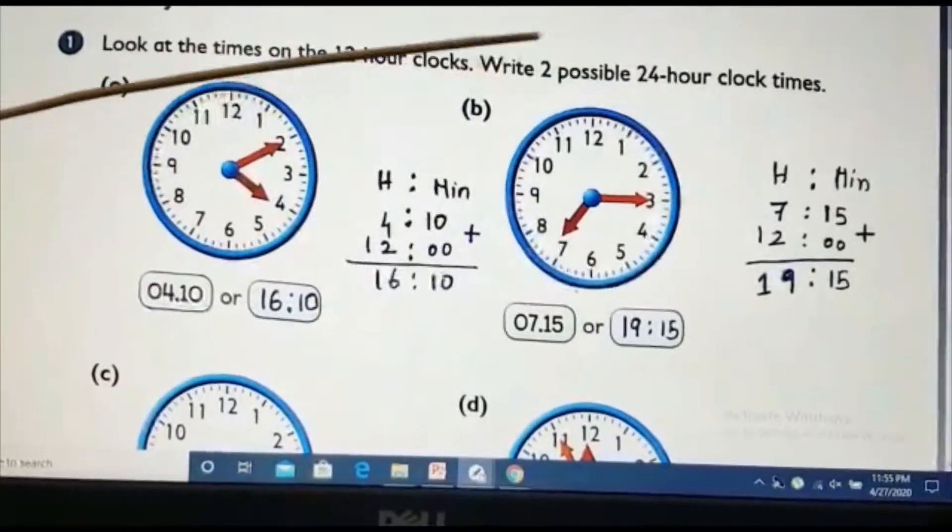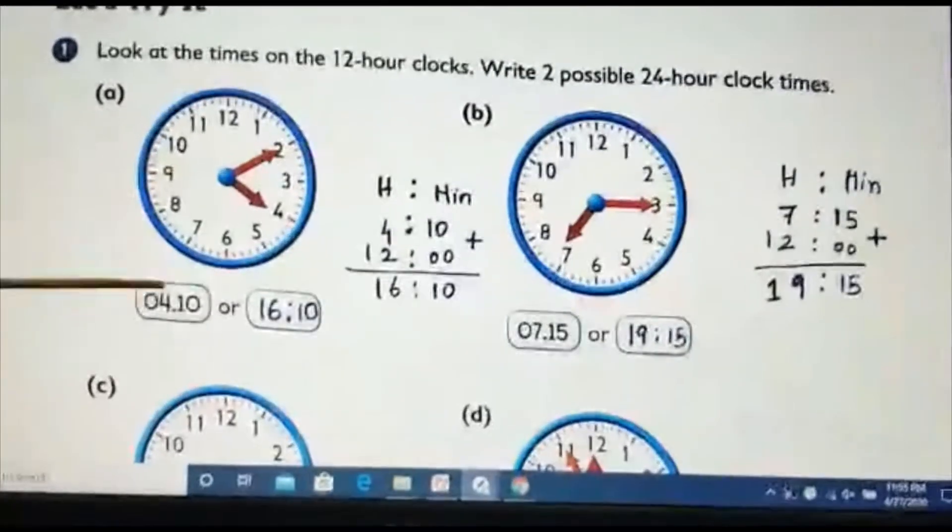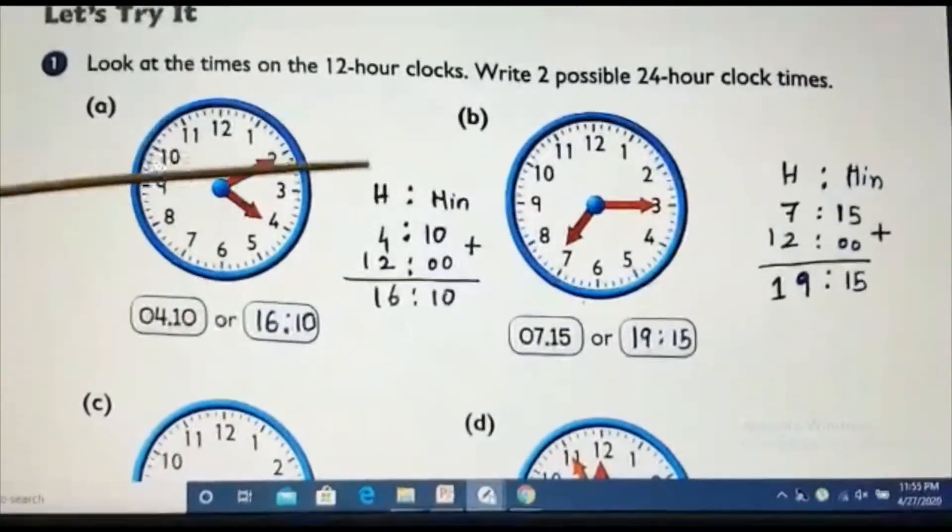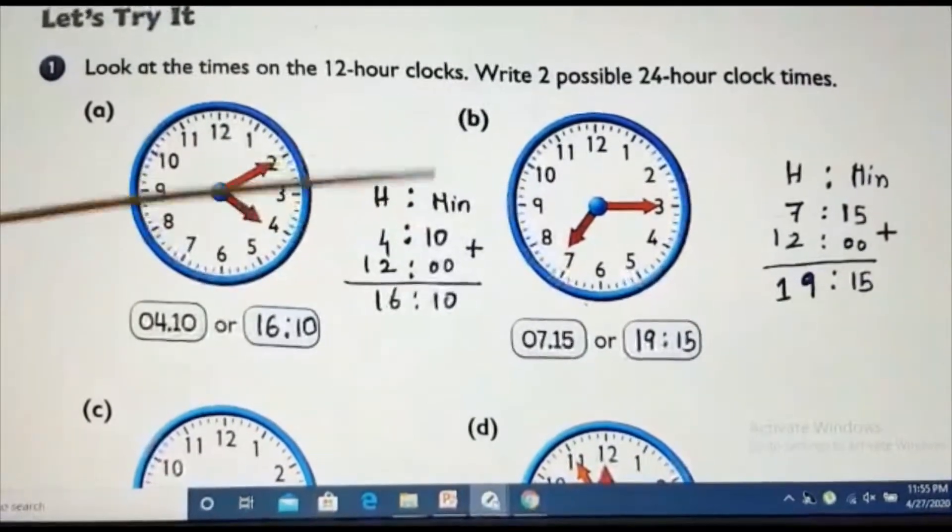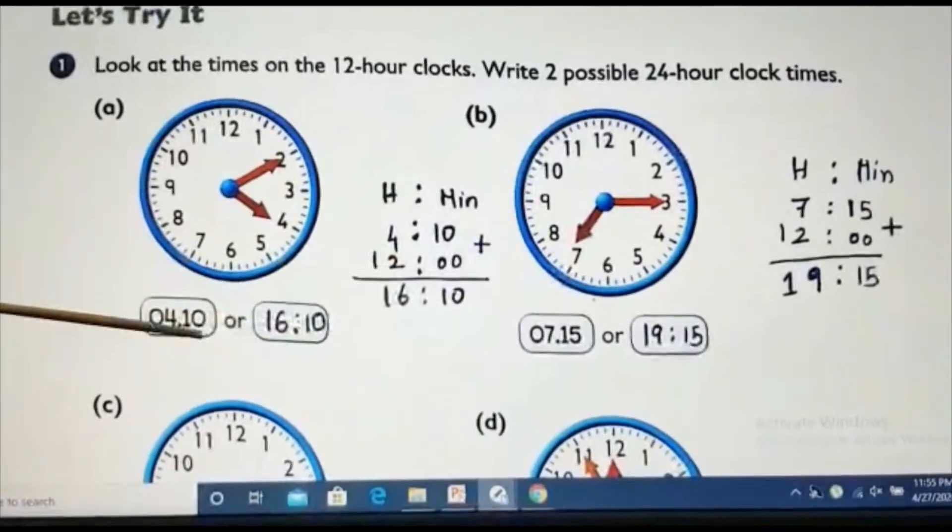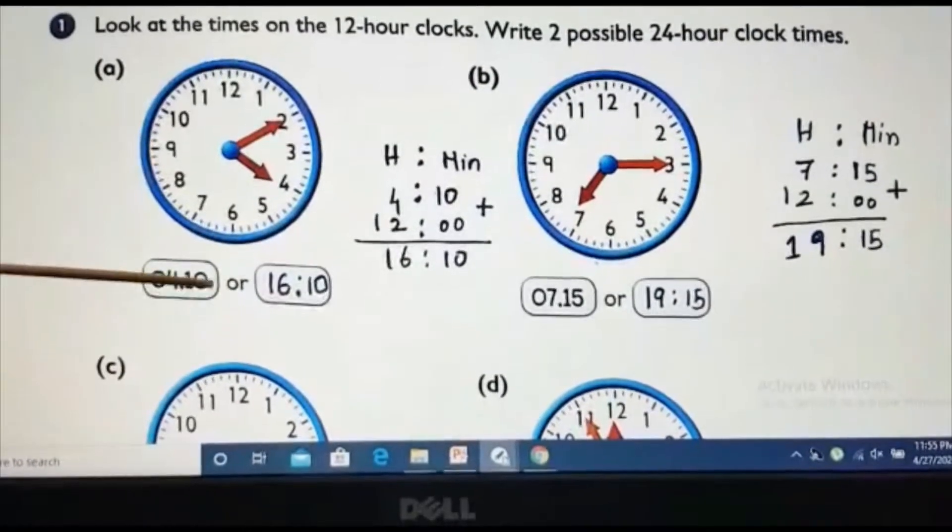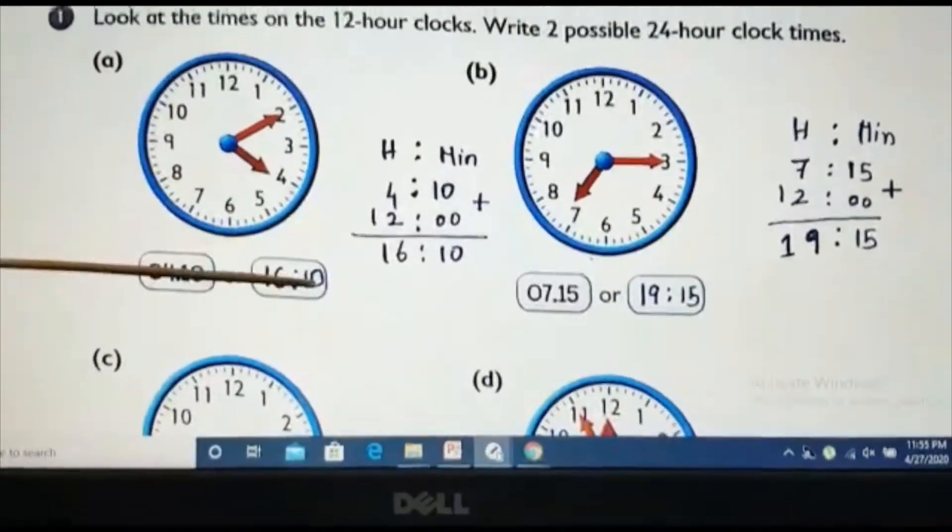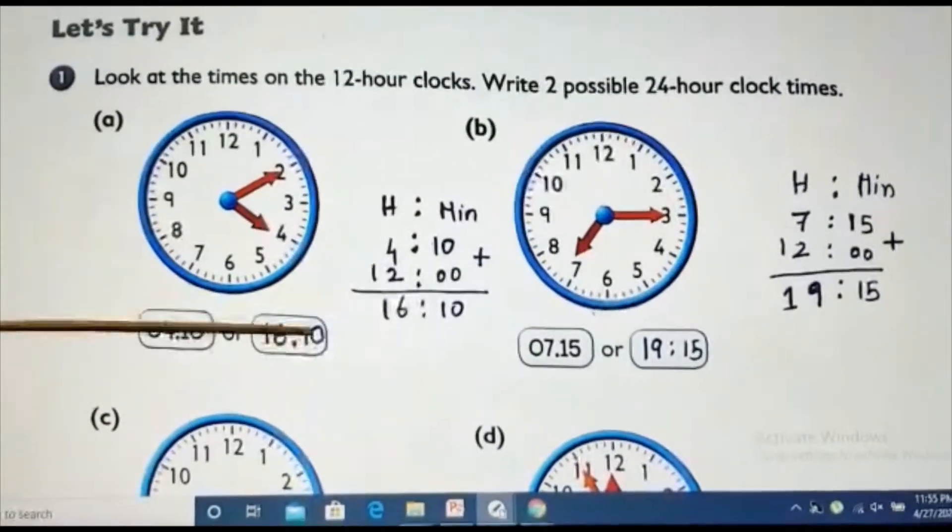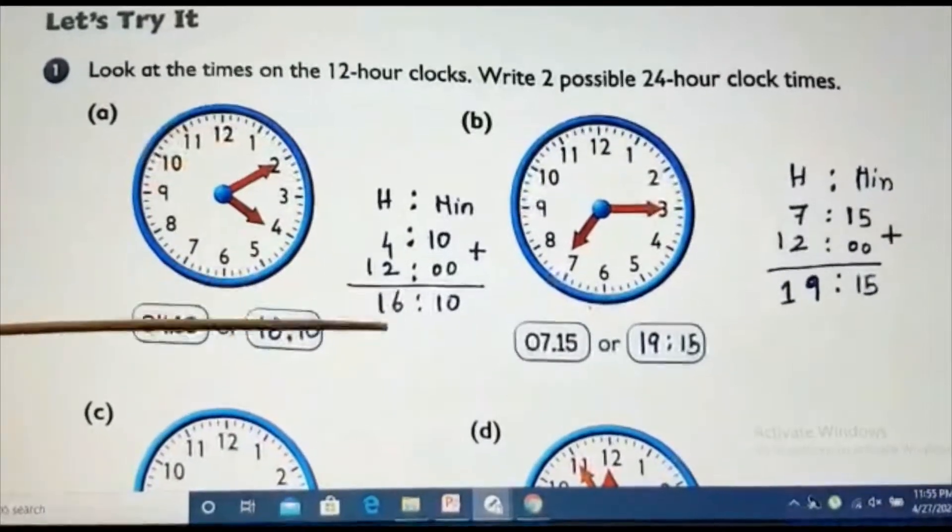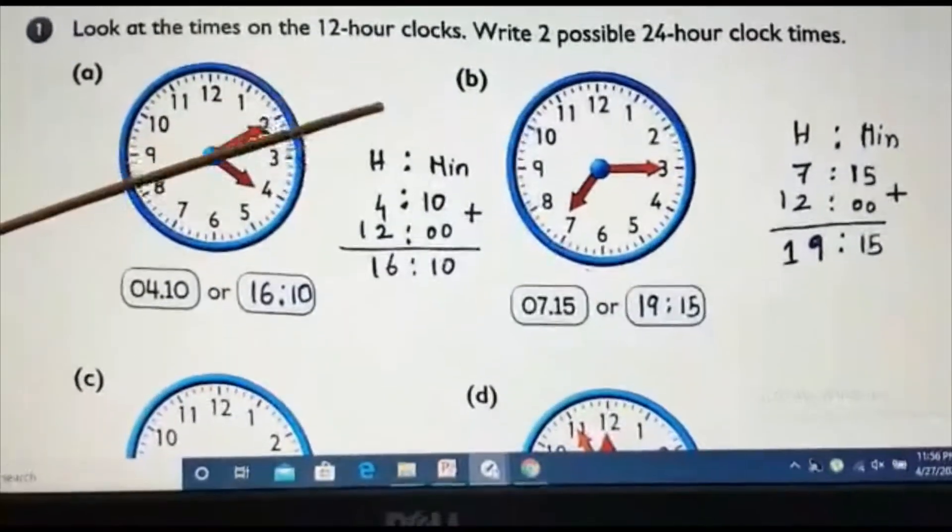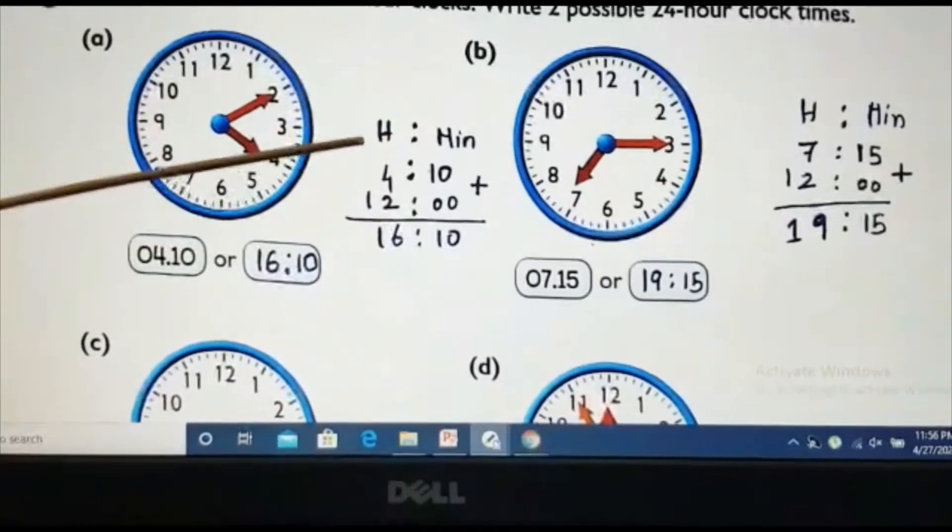See, 12-hour clock, write 2 possible 24 hours timing. So, 4:10. We know 4:10 hours, minutes. So, what we should do? 4:10 is one thing. So, we will write 04:10 is already there. So, write the second one in PM, that is the PM timing. How will I do? In 24 hours clock, no PM already. So, we will add 12 in the hours side. Look here.